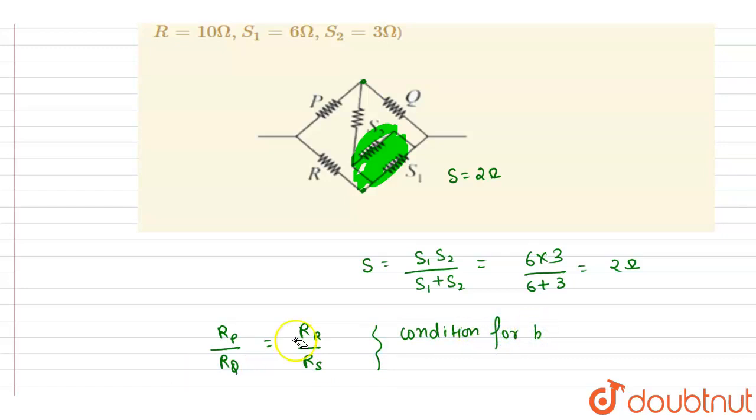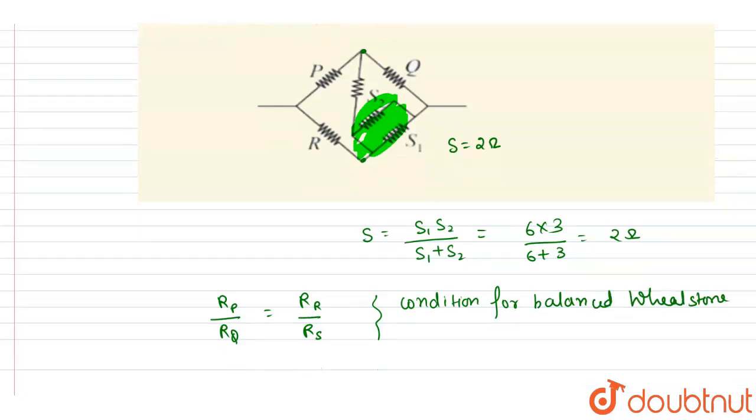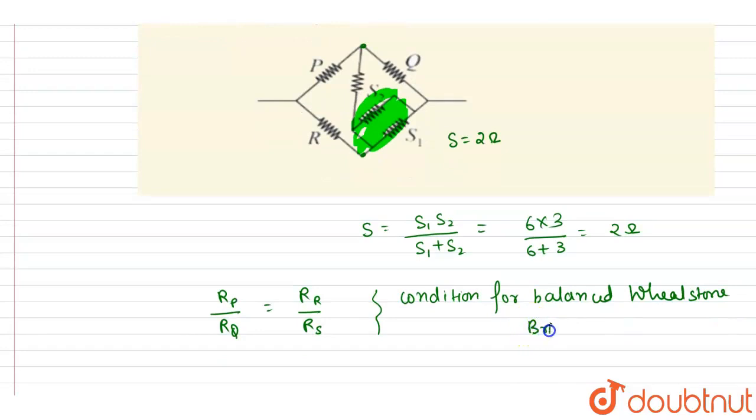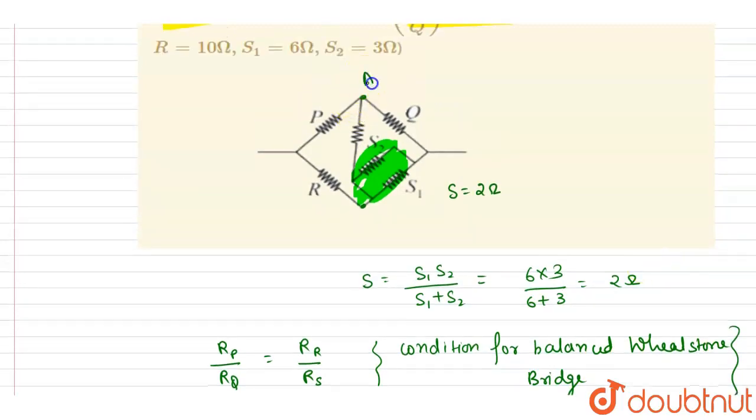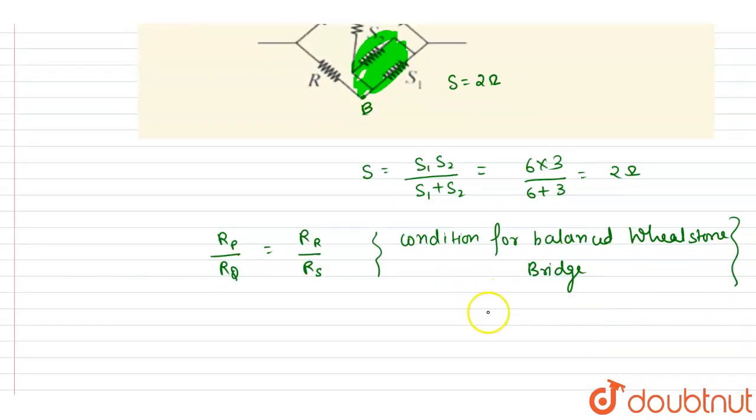Condition for balanced Wheatstone bridge. So basically what happens when a Wheatstone bridge balances, the potential at A and potential at B becomes equal. At balance, when the Wheatstone bridge balances, potential at A equals potential at B.